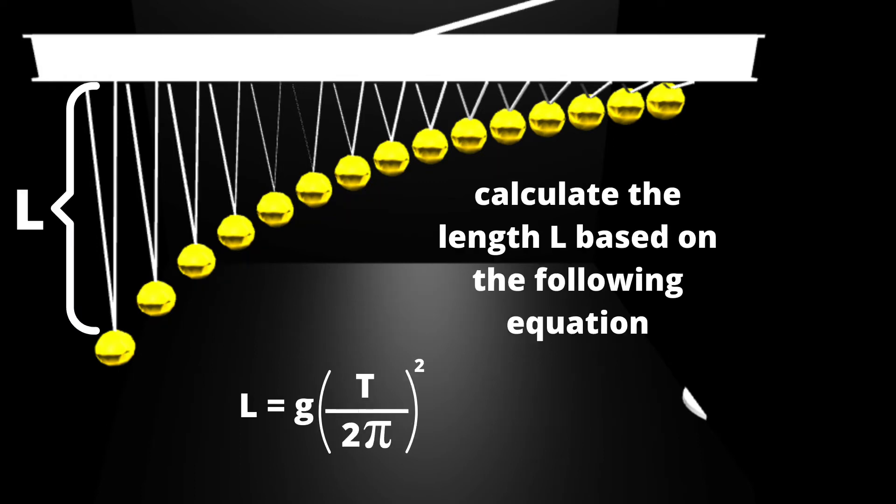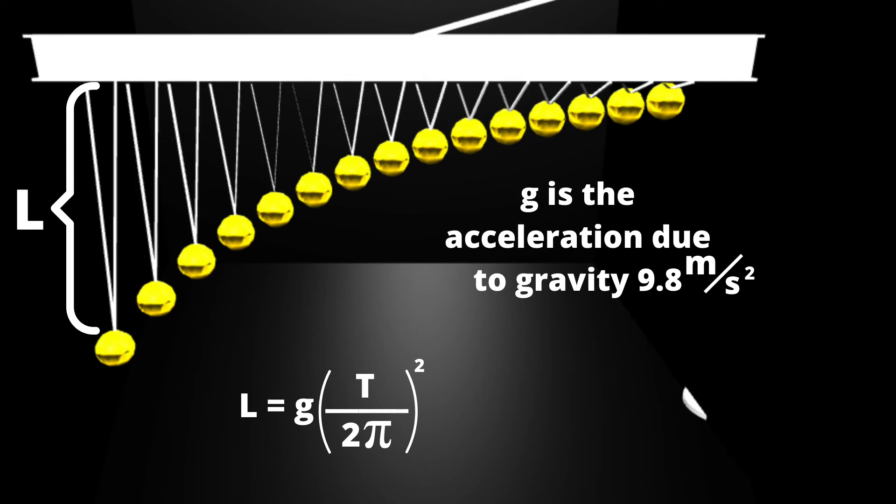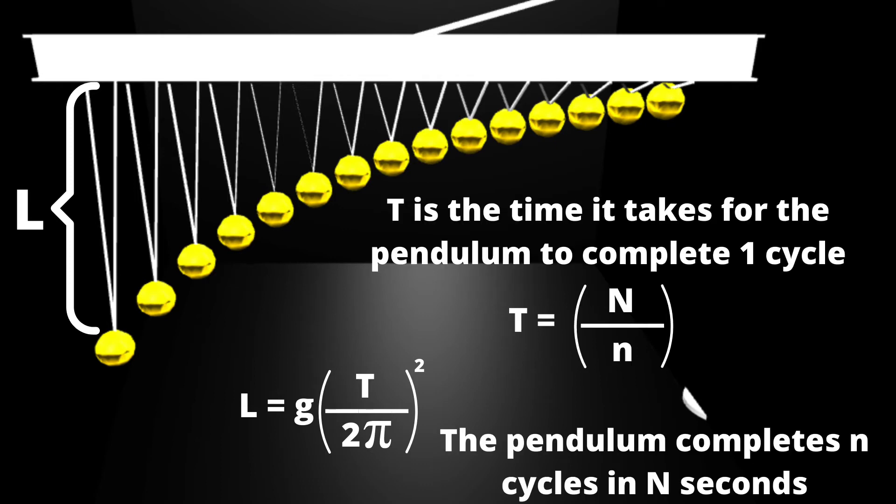Now we can calculate the length of each string based on the following equation. But let me explain what G and T are. G is basically the acceleration due to gravity, 9.8 meters squared. We learned that number in school. And T is the time it takes for the pendulum to complete one cycle. Big N is what you chose in the beginning. So how long will this whole dance last? For example 60 seconds. And small n is the amount of swings the pendulum will have in that amount of time.